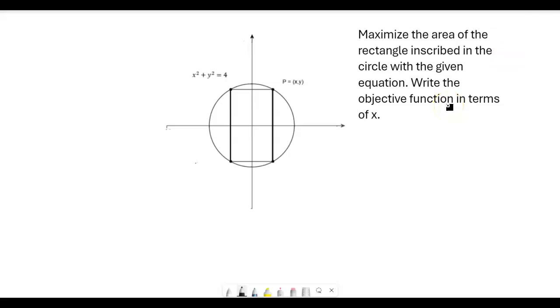Hey everyone, this is Mr. Beckstrom, and today we're going to take a look at a problem here. This is optimization. Maximize the area of the rectangle inscribed in the circle. So here's the rectangle with the given equation. They give us an equation of the circle here, which is x squared plus y squared equals 4. And they want us to write the objective function in terms of x and then solve it.